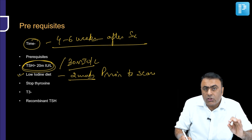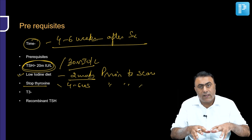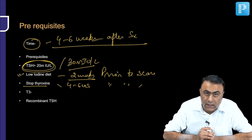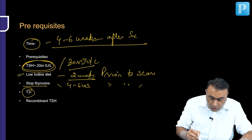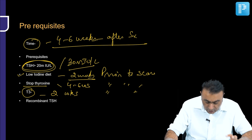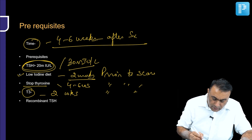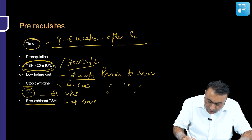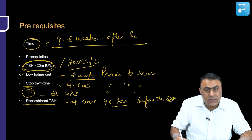Thyroxine must be stopped so that TSH levels rise. If the patient cannot tolerate the symptoms of hypothyroidism, we can start T3, but T3 should also be stopped at least 2 weeks prior to the scan. In some patients who cannot tolerate hypothyroidism, another option is recombinant TSH, which should be started at least 48 hours before the scan — though it is a costly option.